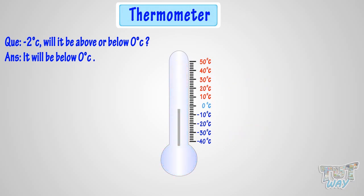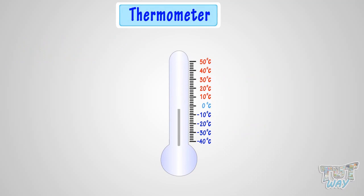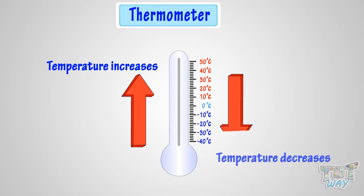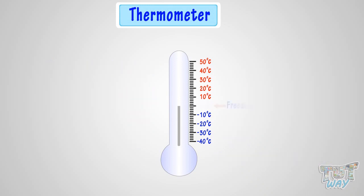So what have we learnt? We have learnt that the thermometer is used to measure temperature. Temperature increases as the silver line inside the thermometer rises and temperature decreases as the same line comes down. The freezing point of water is zero degrees Celsius.